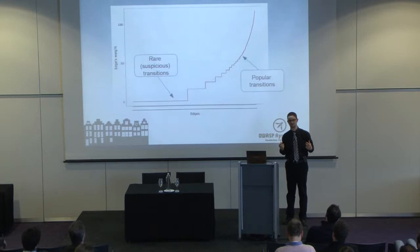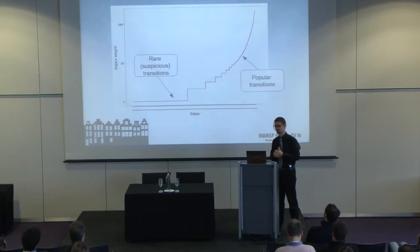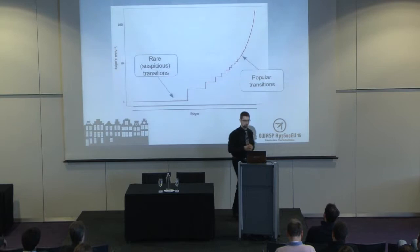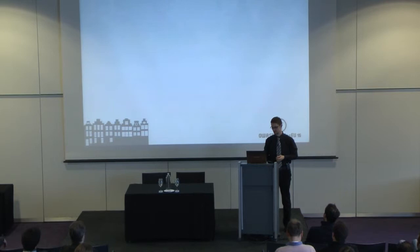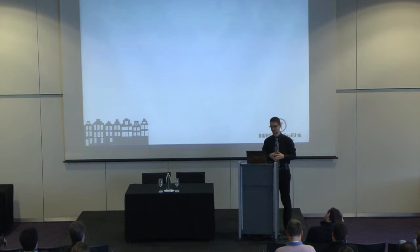If we just keep building this graph - and of course we have to also erode it, removing some weights from time to time because usage may change - then we have a tool that allows us to identify suspicious requests: those with only one or two occurrences. We can use it for reporting to notify the administrator that something is going on, or we can implement automated tools that will block a certain user for a certain period of time, hindering their ability to probe our website.